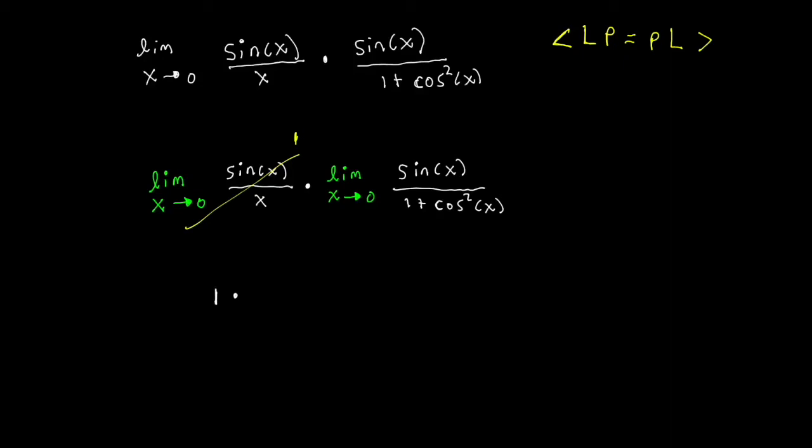And let's go ahead and record that here as well. So we have 1 times applying the limit here. Everywhere we see an x, we're going to replace it by a 0. So we get sine of 0 over 1 plus cosine squared of 0.